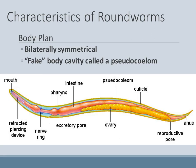Roundworms also have bilateral symmetry, but instead of having a gastrovascular cavity like cnidarians and flatworms, they have what's called a pseudocoelom — a fake body cavity. We have true body cavities as mammals, and roundworms have the beginnings of that. They are a transitional group, moving from a gastrovascular cavity with one opening (both mouth and anus) to having a true cavity with two openings, where food moves in one direction.